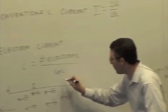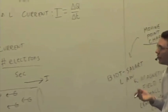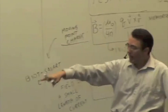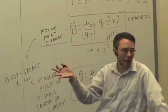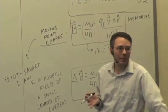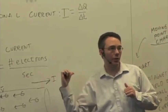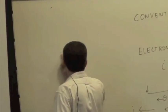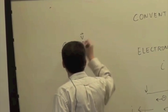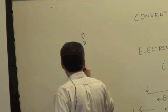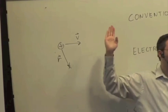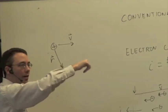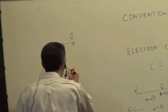The directions of conventional and electron current are opposite. By convention — that's where the name conventional current comes from — the direction is the direction of positive charge motion. In most metals it's not the positive charges that are moving, it's the electrons. But you can't tell the difference between negative charges moving one way or positive charges moving the other way, at least not by looking at the magnetic field. For a positive charge moving in one direction with the observation location down here, the right-hand rule — point fingers in the direction of V, curl toward R — gives a magnetic field pointing into the board.